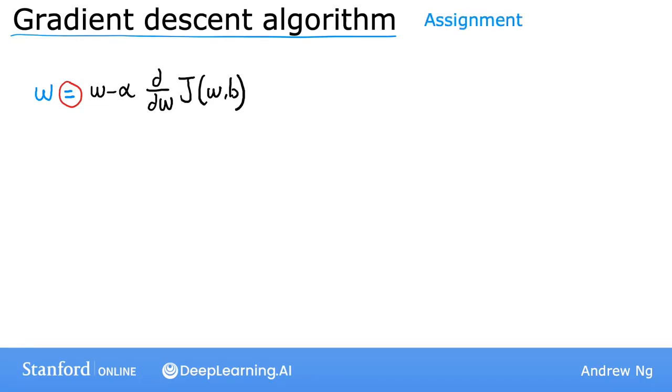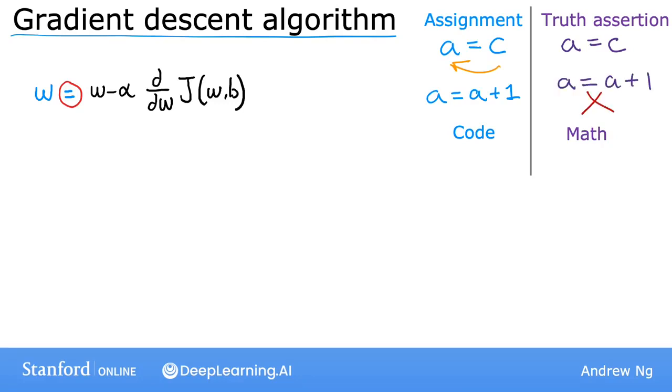Specifically, in this context, if you write code that says a equals c, it means take the value of c and store it in your computer in the variable a. Or if you write a equals a plus 1, it means set the value of a to be equal to a plus 1, or increment the value of a by 1. So the assignment operator in coding is different than truth assertions in mathematics, where if I write a equals c, I'm asserting that the values of a and c are equal to each other. And hopefully, I will never write a truth assertion a equals a plus 1, because that just can't possibly be true.